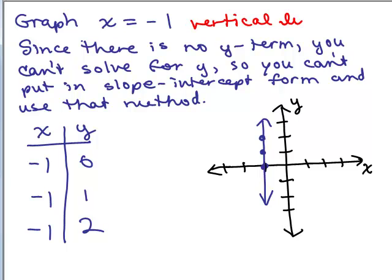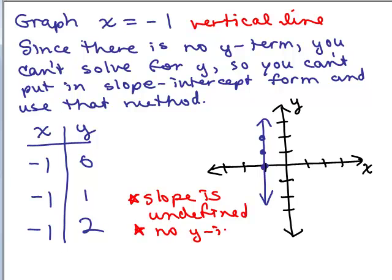I wonder why we couldn't put it in the slope intercept form. Well, the vertical line, the slope is undefined. That's one reason it was impossible to put in slope intercept form. Also, where does it cross the y-axis? Nowhere. There is no y-intercept. So first, the slope is undefined. Second, there's no y-intercept. So there's a couple reasons why you could see you would have trouble trying to put it in slope intercept form.